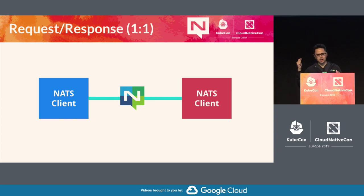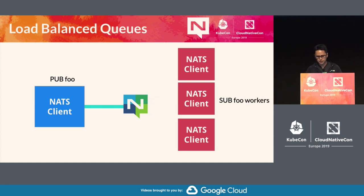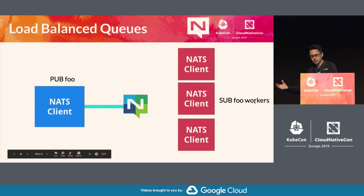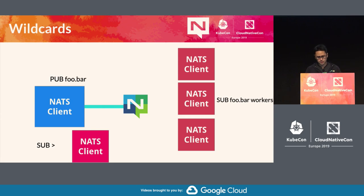You can do request-response, which is one-to-one communication, or one-to-many. You can publish on foo and it gets announced to any number of clients interested in the foo subject. You can enhance subscriptions by appending a queue group name, for example sub foo workers. In that case, only one of them will be receiving the request randomly — there is only random load balancing.